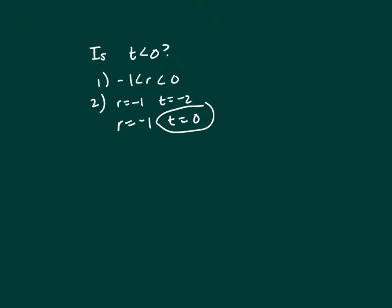So neither one of those work independently. So let's put both of them together. All right, so we know that r is negative from clue 1. And clue 2 says the distance between r and t, r minus t, equals r squared.